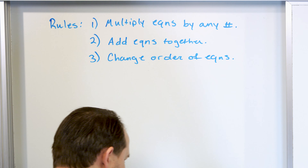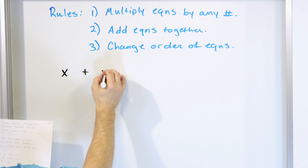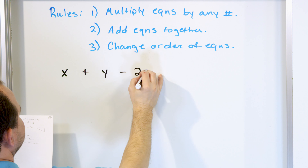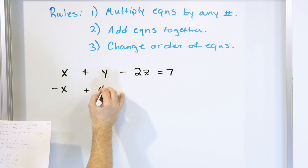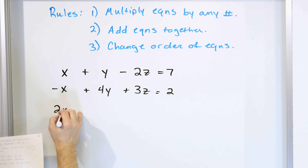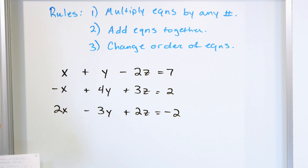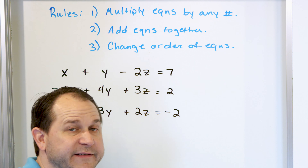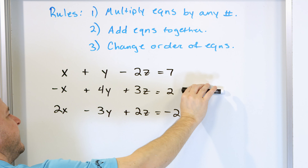Let's get a practical example. Here is the system of equations: x plus y minus 2z equals 7 (equation 1); negative x plus 4y plus 3z equals 2 (equation 2); 2x minus 3y plus 2z equals negative 2 (equation 3). Now this is obviously not in triangular form. Triangular form means you want three variables in the first equation and two variables in the second equation.